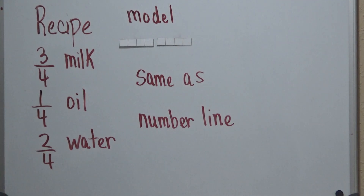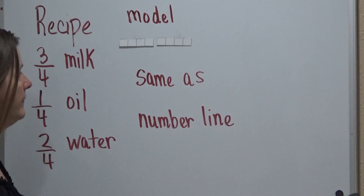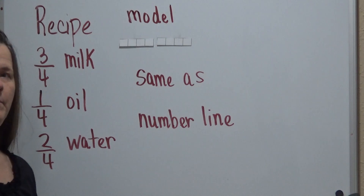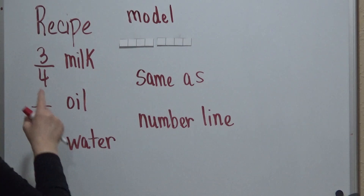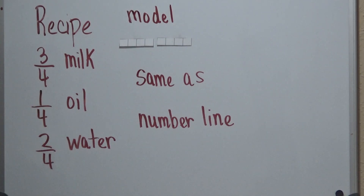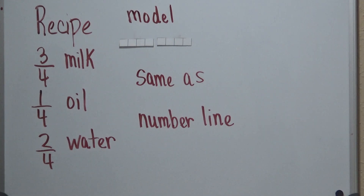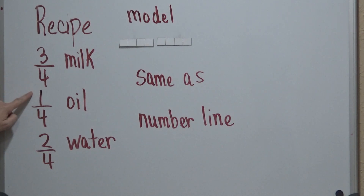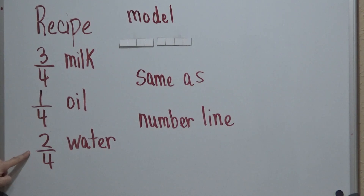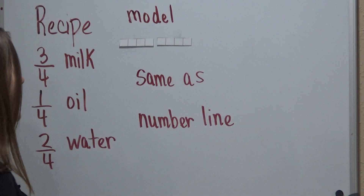The first one we're going to do is where a is greater than b. So the question is: a recipe calls for you to use 3 fourths of a cup of milk, 1 fourth of a cup of oil, and 2 fourths of a cup of water. How much liquid was needed to make the cake in all?